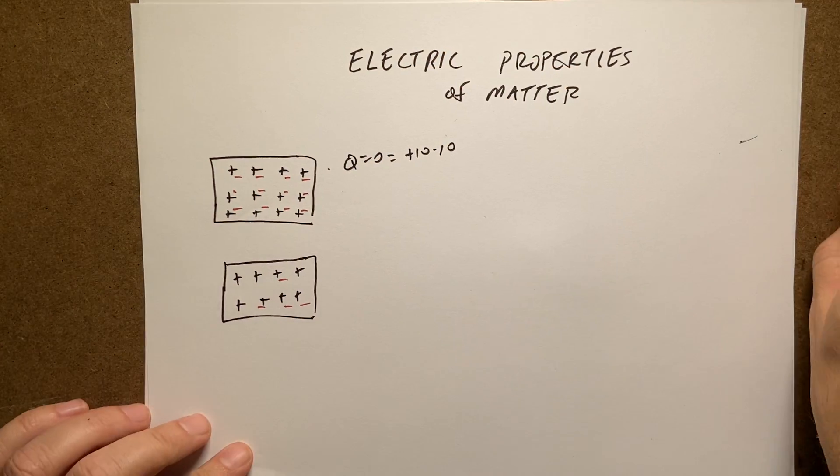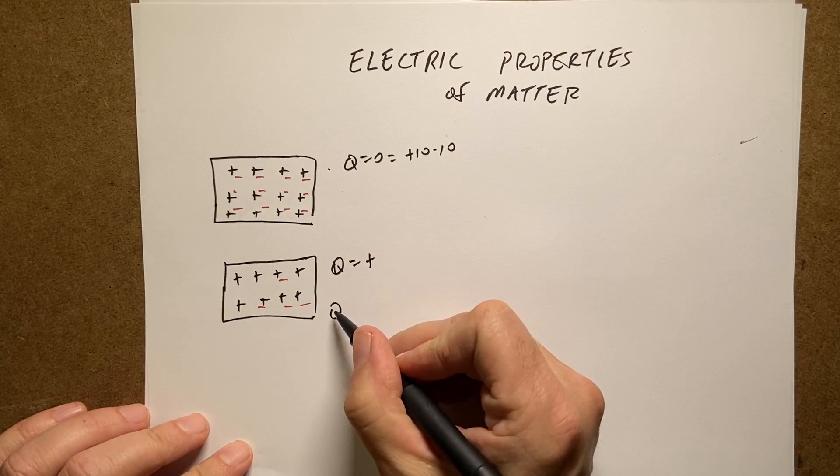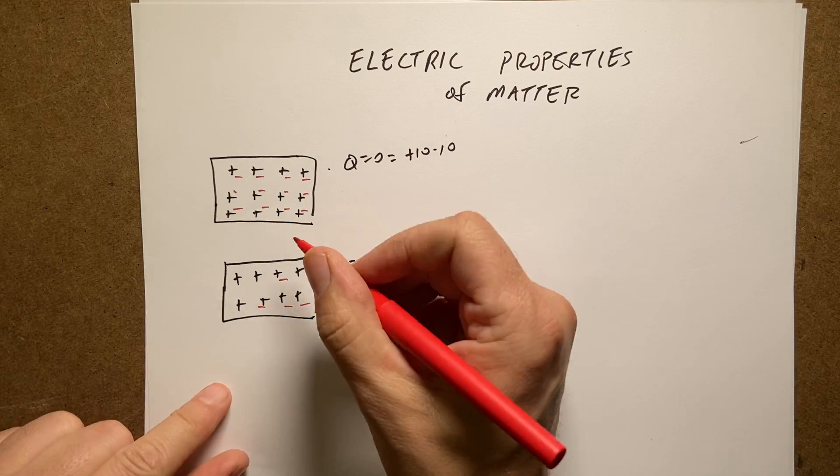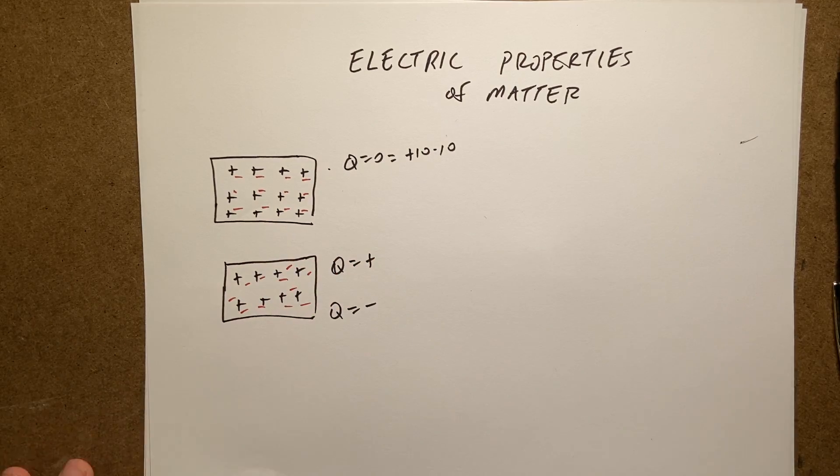If I have extra negatives, this is positive. Q equals positive. And then if I want to make it Q equals negative, I just add extra charges. And this could be, maybe this is an aluminum.